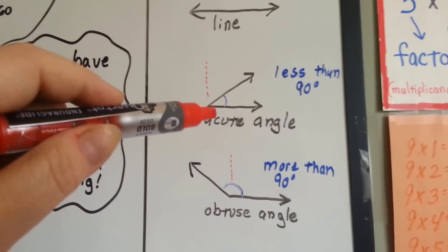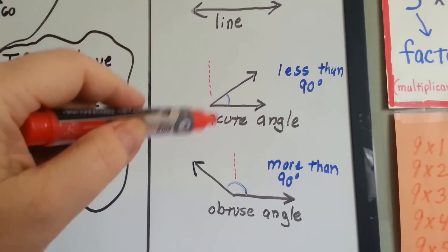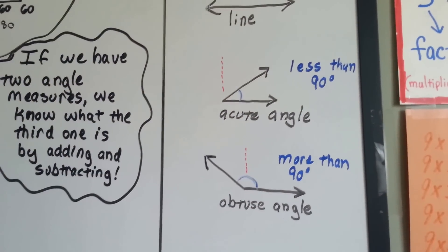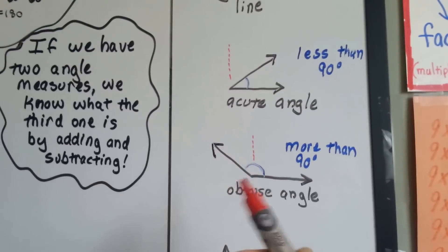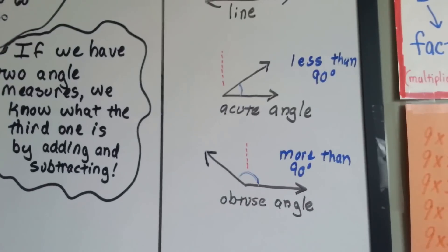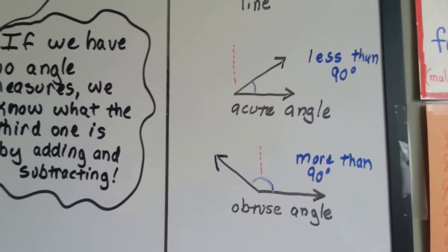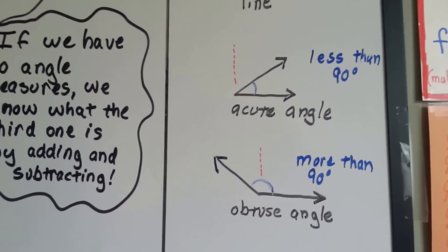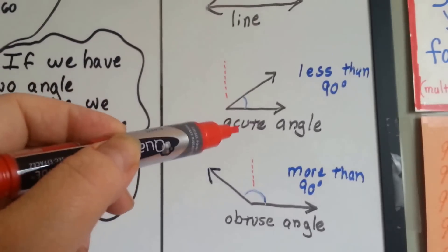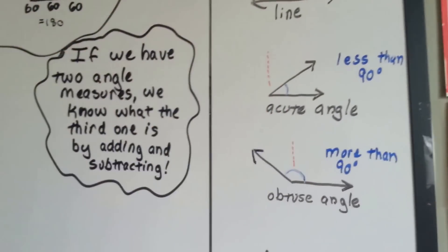Here's our acute angle that's less than 90 degrees. See, here's the 90-degree line. Acute angles are always on this side of the line; obtuse angles are always on the other side. They're all more than 90 degrees, and acutes are less than 90 degrees. The way to remember it is: the ones that are less than 90 are cute — they're cute little triangles, they're littler.